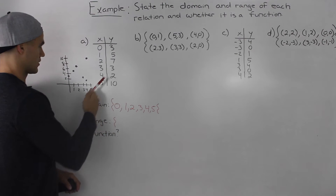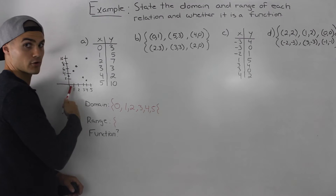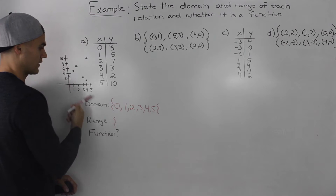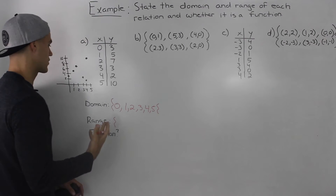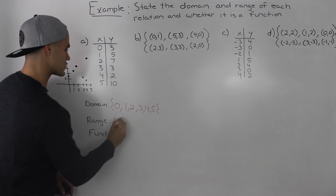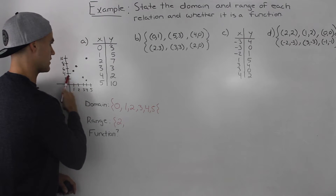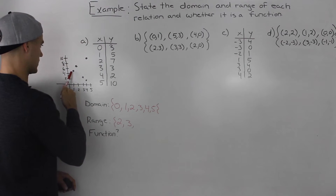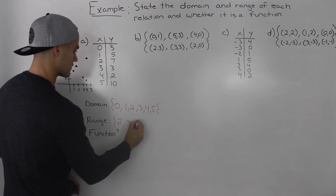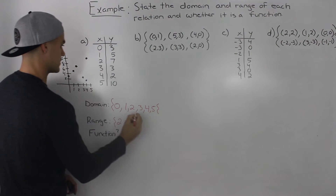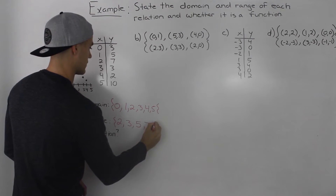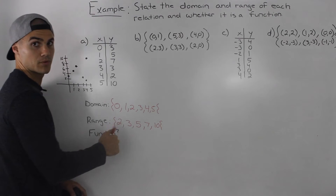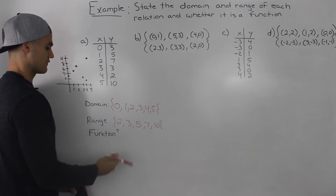Now what about the range? The range is not in order, but it's easy to look at the graph and see the order of the y values — the set of values that the dependent variable can take. So the first one would be two, next is three (which occurs twice, so we write it once), then five, then seven, and then ten. That's our range from lowest to highest.